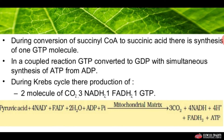GTP is converted to GDP with the simultaneous synthesis of ATP from ADP. During the Krebs cycle, there is production of two molecules of CO2, three NADH, two FADH2, and one GTP.